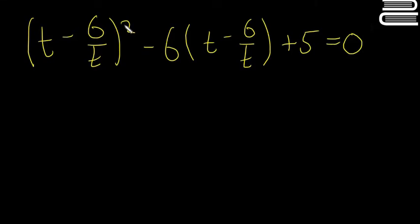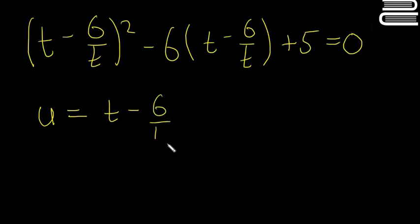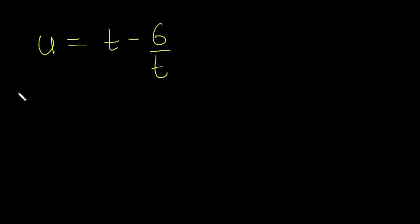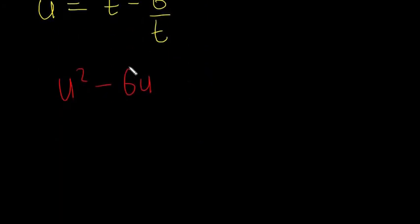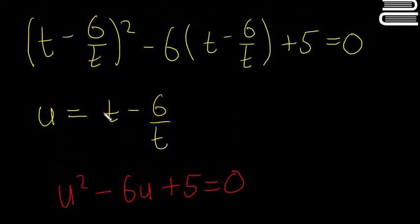If you try to multiply this all out your head might explode — it'll be way too messy and you'll almost certainly make a mistake. The clever approach is to notice that the bracket (t minus 6 over t) appears like an X would in a standard quadratic. So we let U equal t minus 6 over t. That substitution gives us a new, simpler quadratic: U squared minus 6U plus 5 equals 0. U is used as the substitute letter rather than X just to avoid confusion.